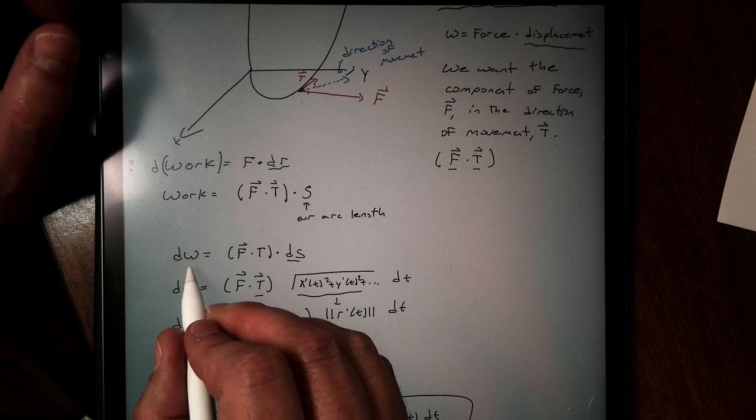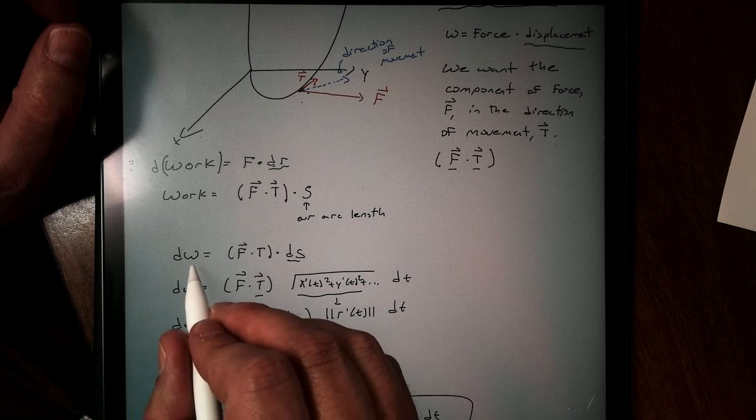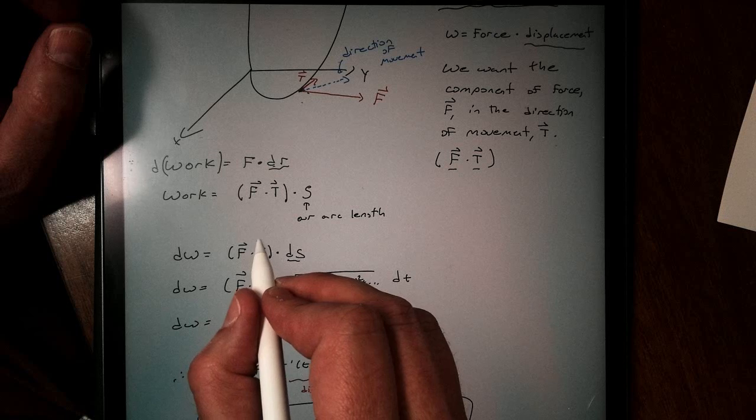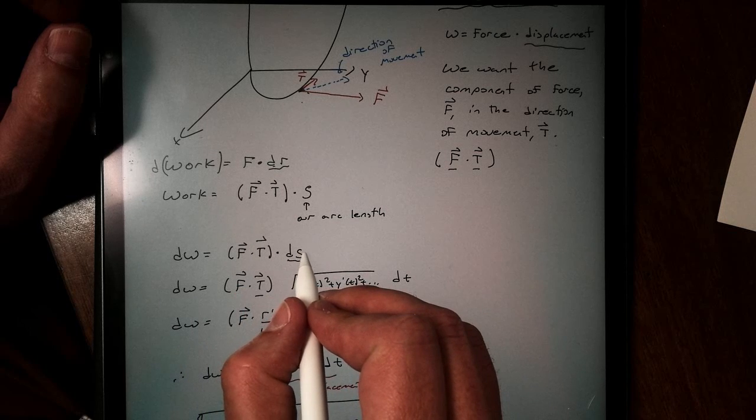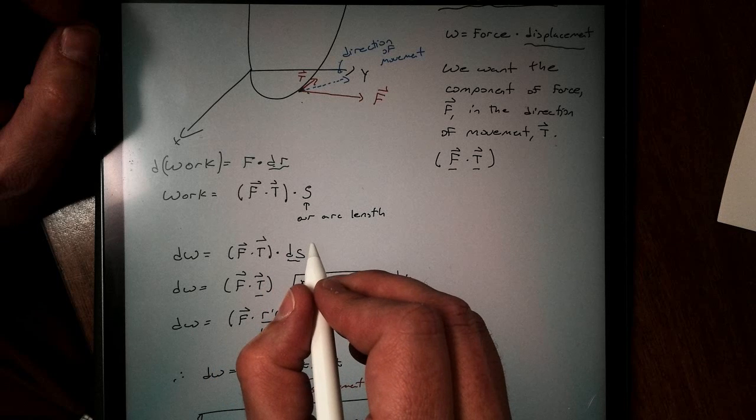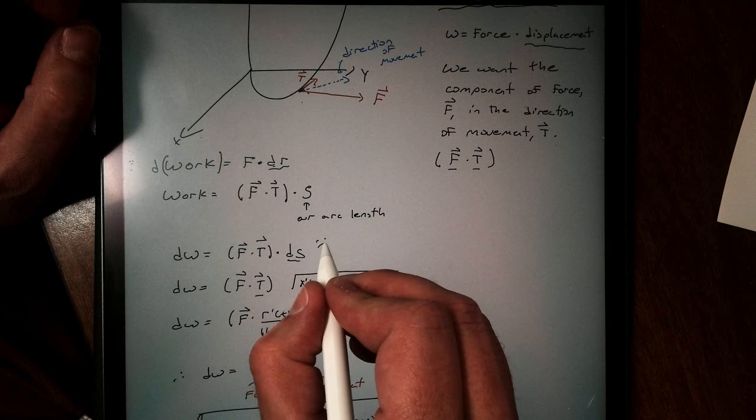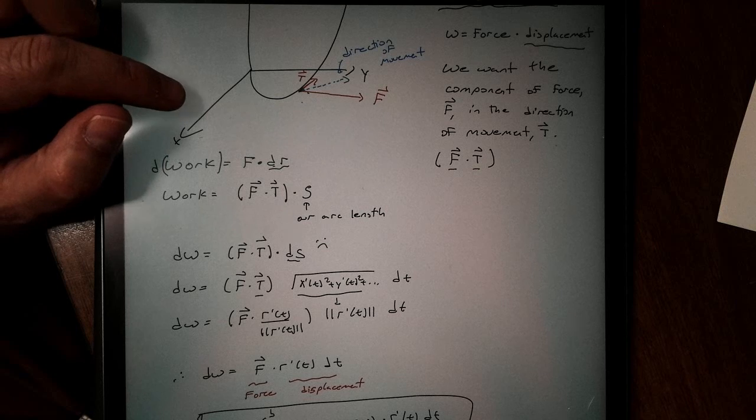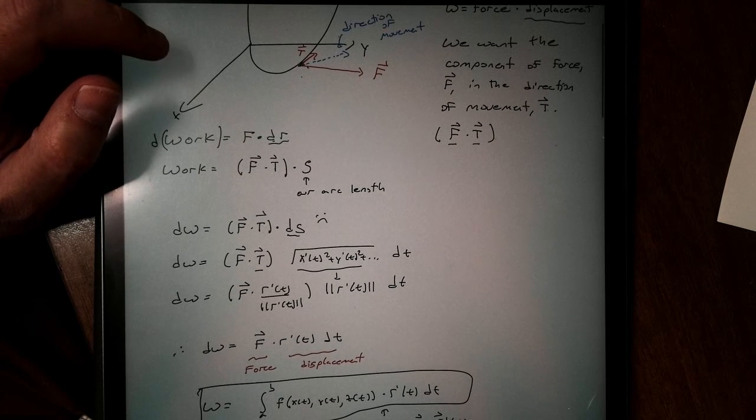So I can write my work problem now as dw, the change in work, is equal to F dot t dot ds. But again, there is a slight problem. s is really hard to integrate. This is not happy face. We don't like integrating with respect to the arc length. That's really nasty to do.